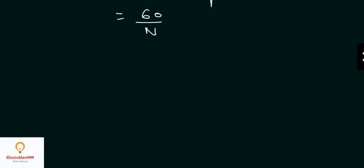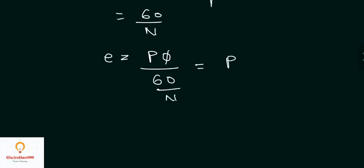By substituting these values, the average induced EMF equals P-phi divided by the time taken, which is 60 over N. This gives us P-phi times N divided by 60.